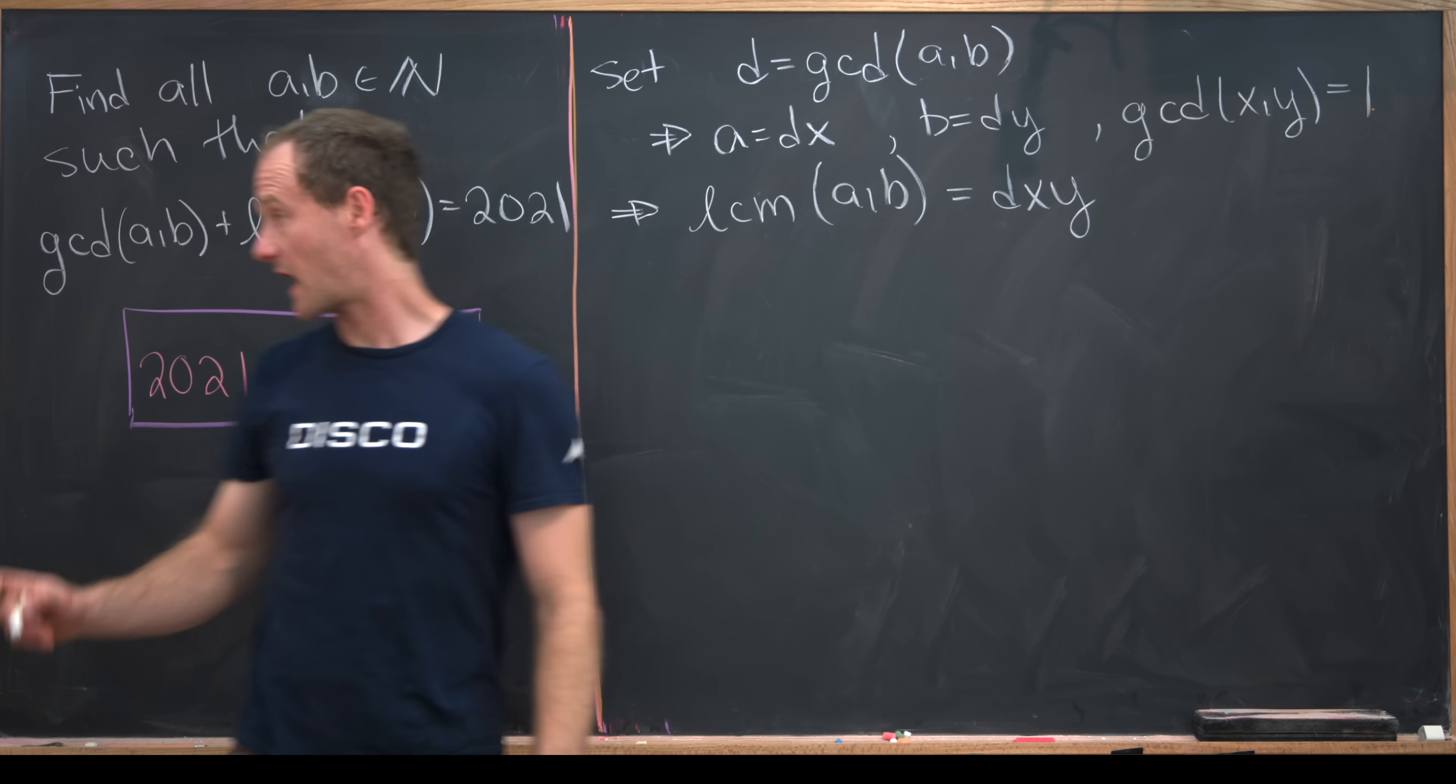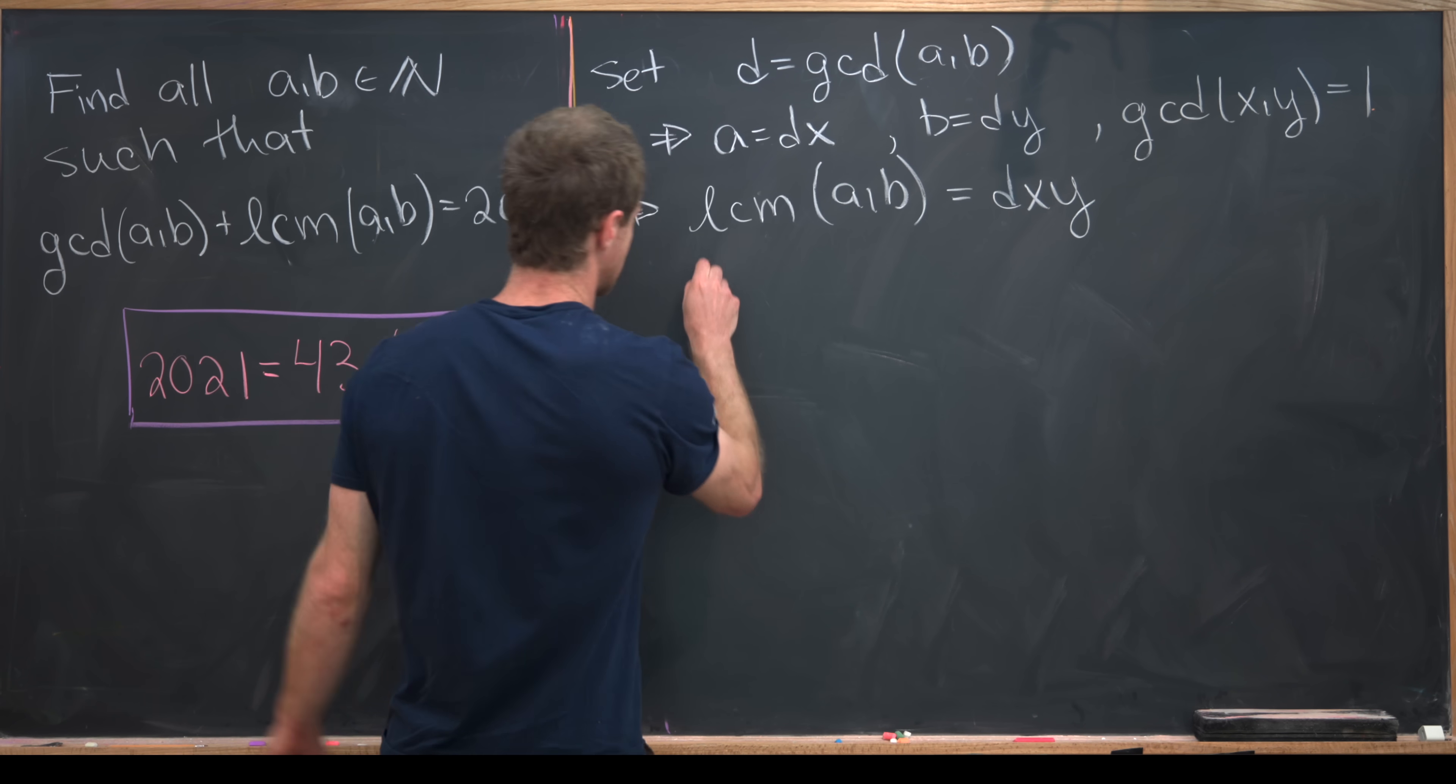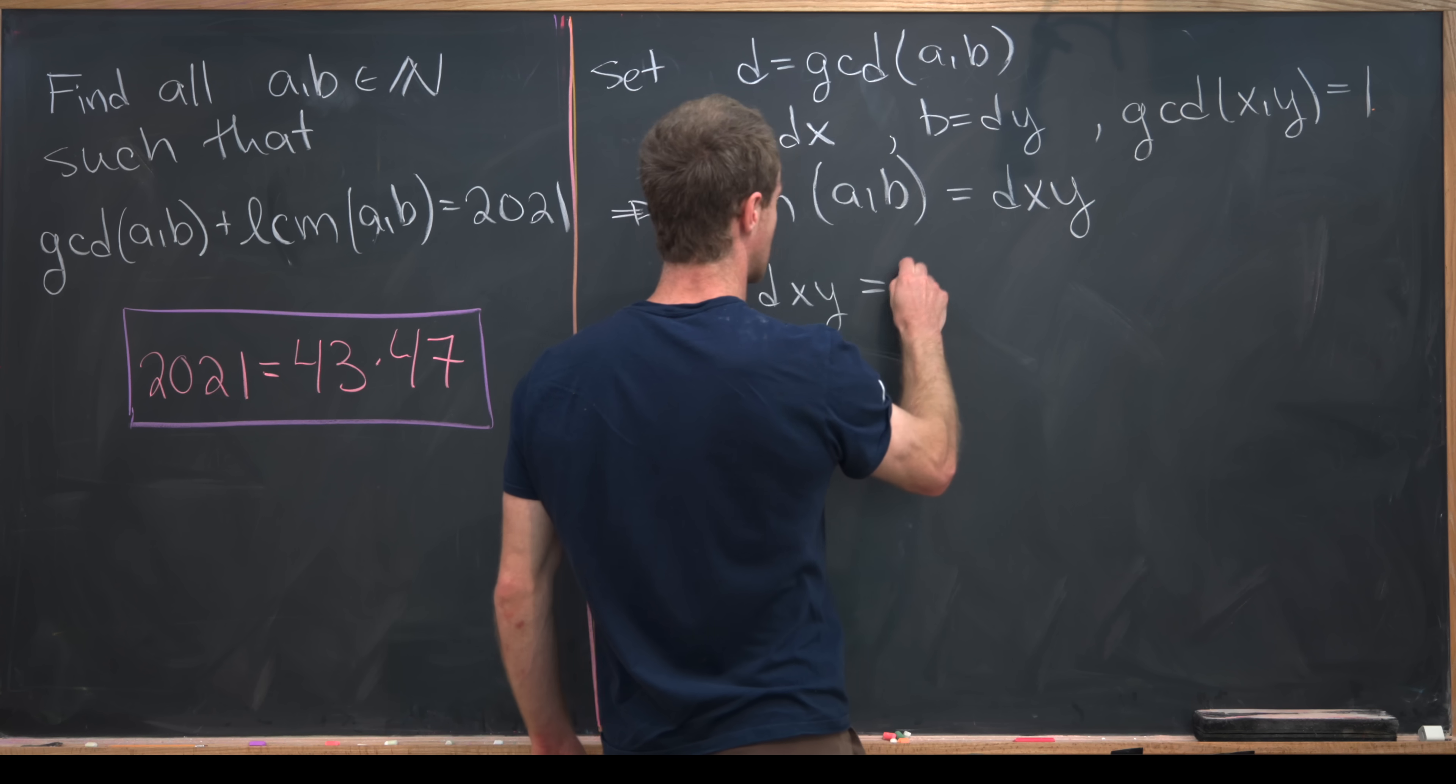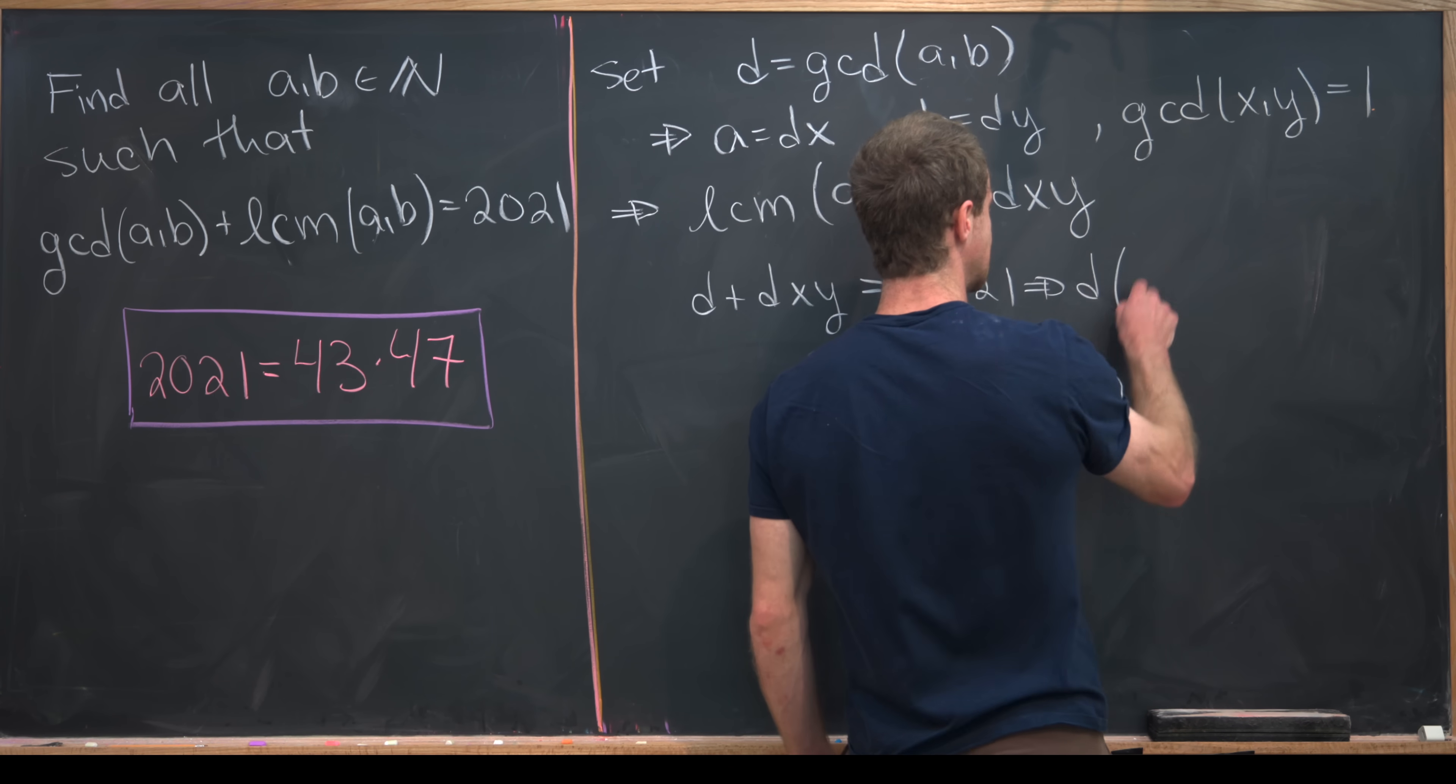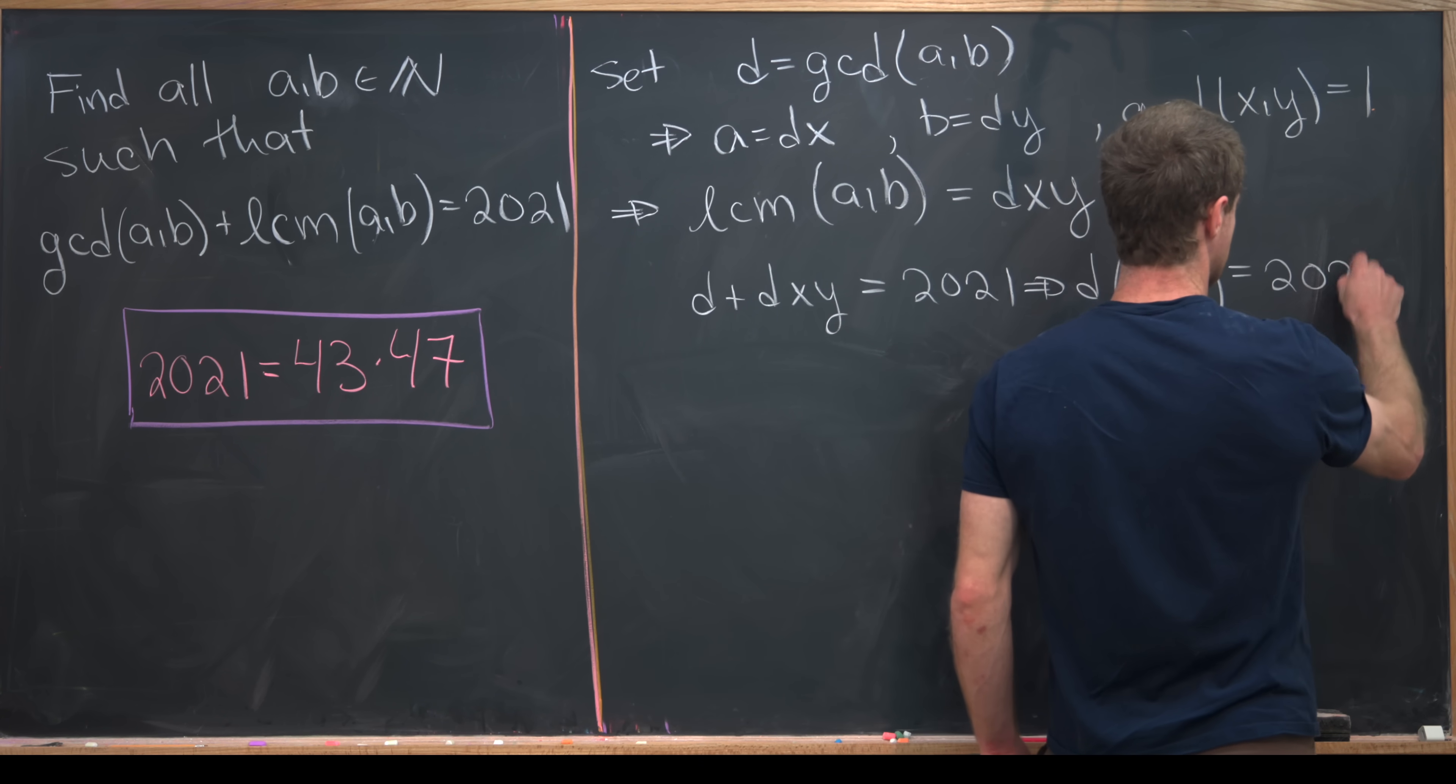Now we can rewrite our equation in terms of D, X, and Y. Notice our equation is now D plus DXY equals 2021. Let's factor a D out of this left-hand side, so I'll write that as D times 1 plus XY is equal to 2021.